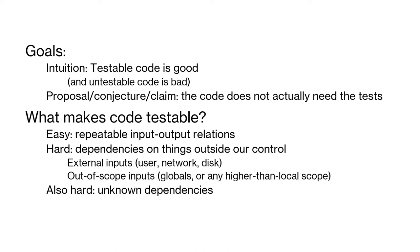There's also a more subtle problem: things that could be accessed but aren't. We need to assume they are not being used by the rest of the system, but we can't guarantee it. This is the giant problem with global variables — since they're global, they could be modified from anywhere, which means you need to know how everything works to make sure it isn't being used inappropriately. So it's not just actual interactions that are a problem, but also these potential interactions.